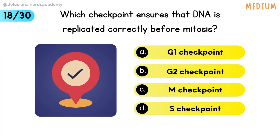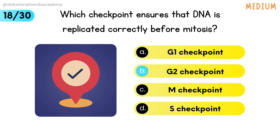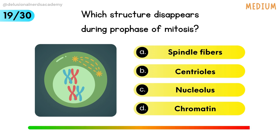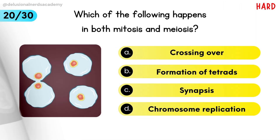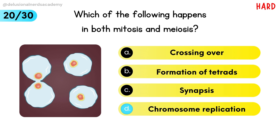Which checkpoint ensures that DNA is replicated correctly before mitosis? G2 checkpoint is the answer. Which of the following happens in both mitosis and meiosis? Chromosome replication is the correct option.